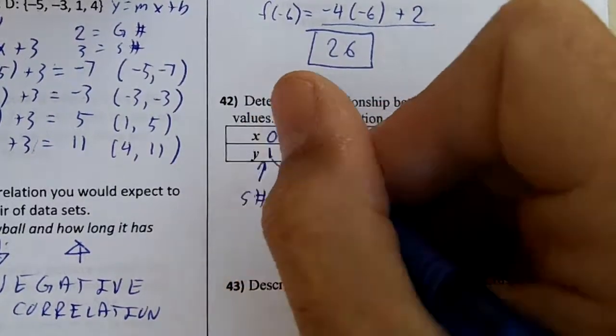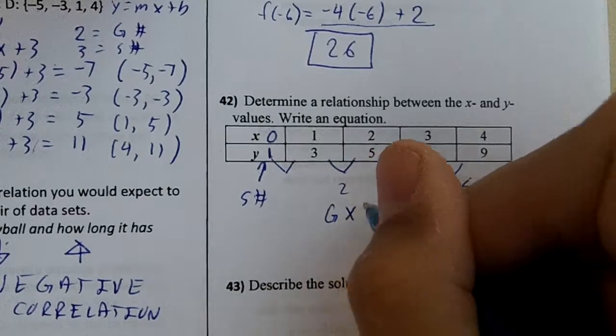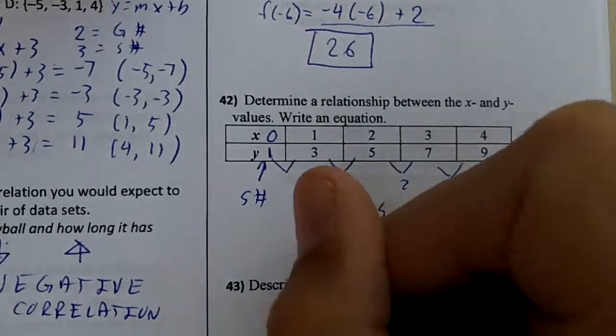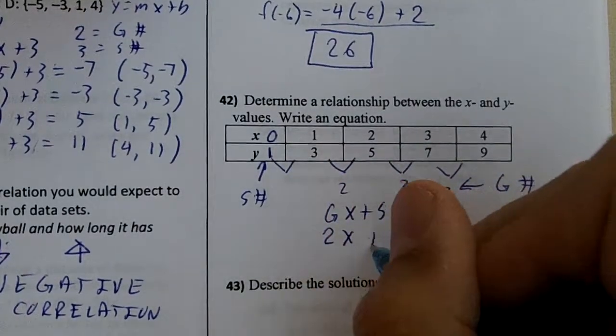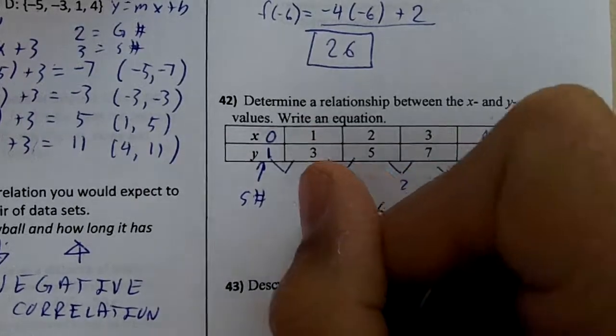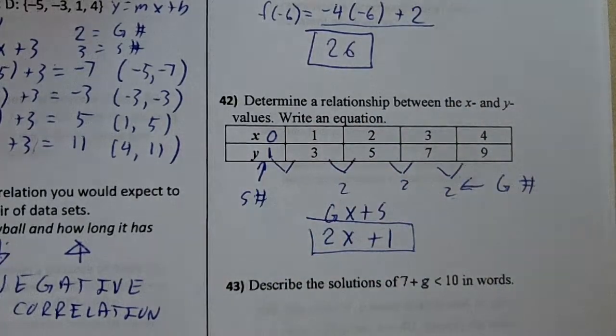Your zero number is your starting number. So we're going to use g times x plus s, and we're going to write down 2x plus 1. That's the relationship between x and y.